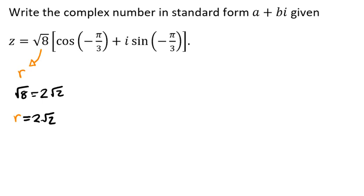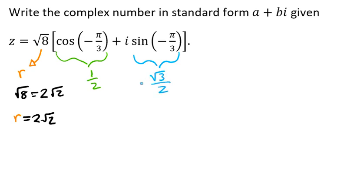Then we're going to evaluate. We'll evaluate the cosine of negative pi over 3, and if we look at our unit circle, that's going to give us 1 half. And we're going to evaluate the sine of negative pi over 3, which gives us negative radical 3 over 2.